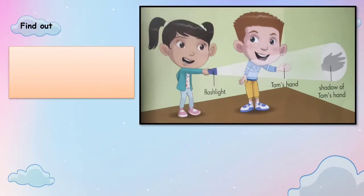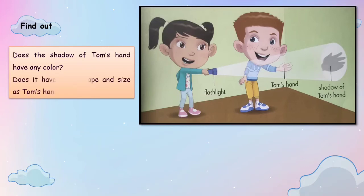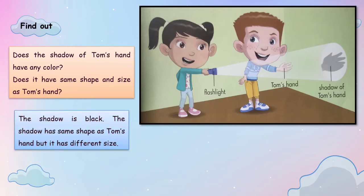Tom blocks the light from a torch or flashlight with his hand. My questions: first, does the shadow of Tom's hand have any color? And second, does it have the same shape and size as Tom's hand? The shadow is black, and the shadow has the same shape as Tom's hand, but the size is different.